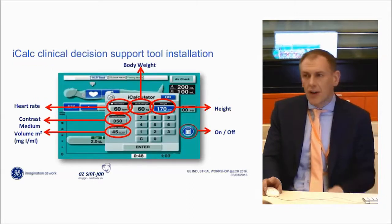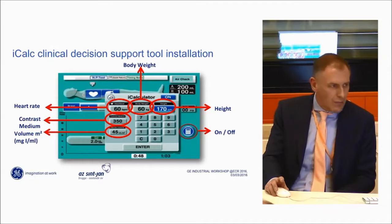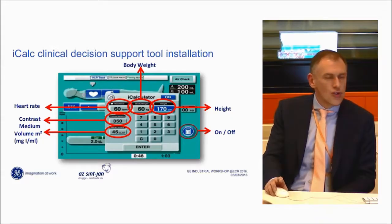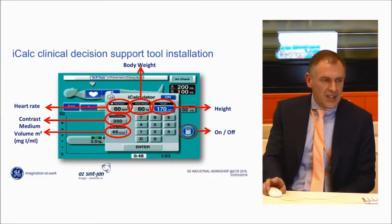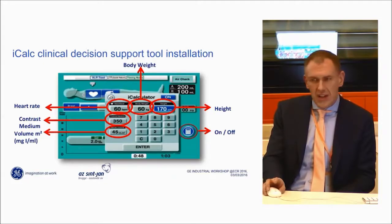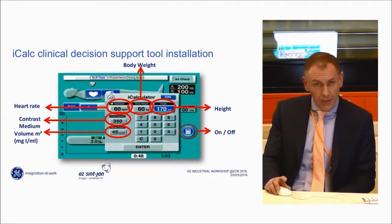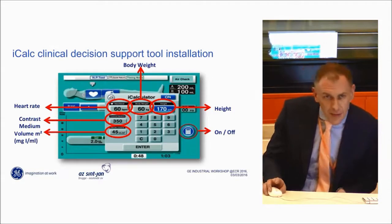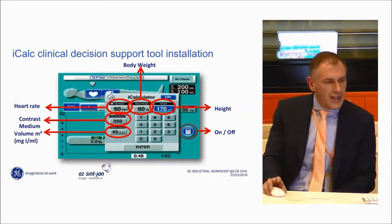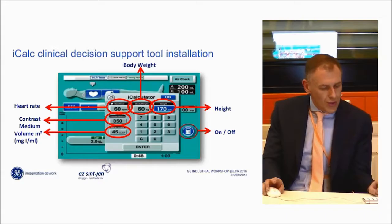We recently installed the iCalc system on our Nemoto injector. This is a clinical decision support tool that helps you calculate the volume you should inject for each patient. The interface is simple: you fill in the patient's height, body weight, heart rate, and the contrast medium being used. Then, with the rule that you need 45 ml per square meter of body surface area, iCalc proposes a volume of contrast to inject.